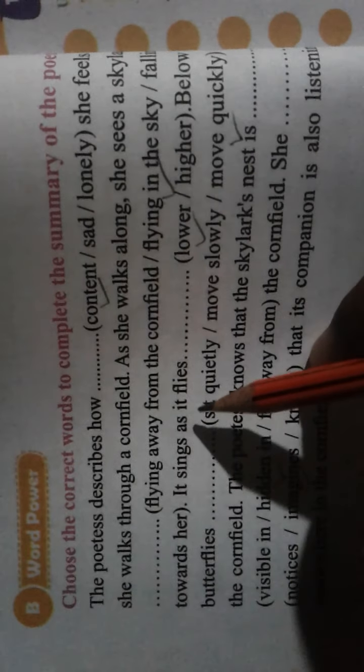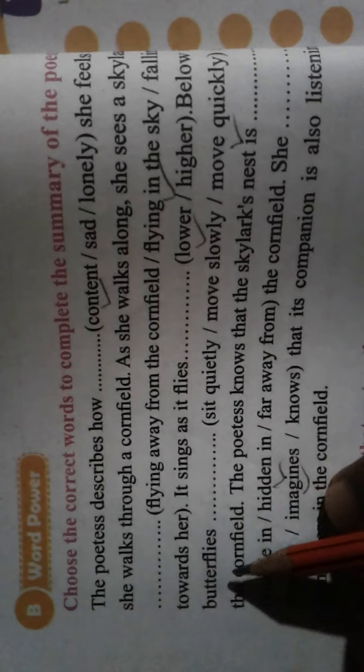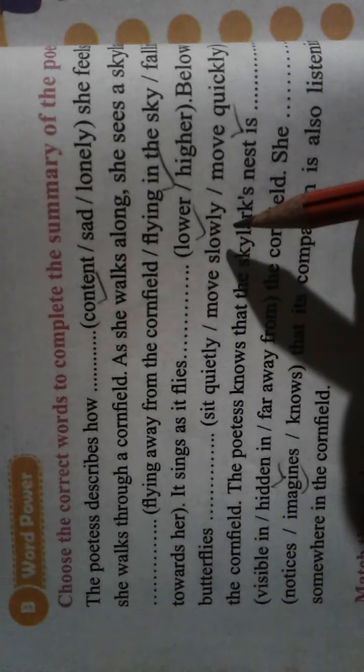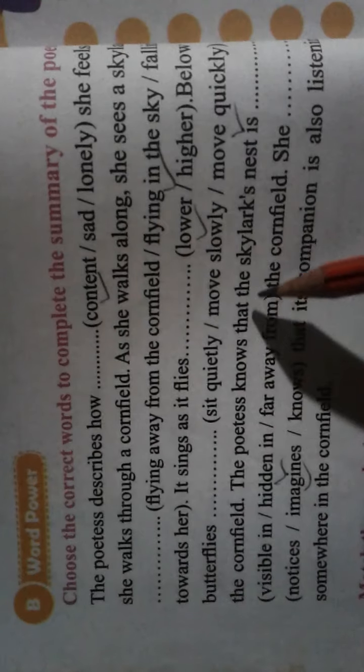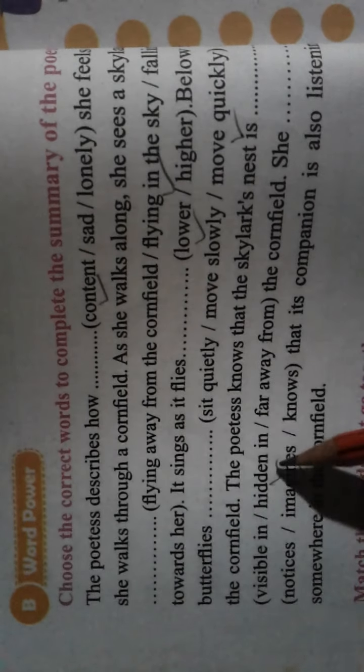As it flies, it is singing. Correct word is 'lower.' Below it, butterflies — correct word is: sits quietly and moves quickly. In the cornfield, the poet now knows that the Skylark's nest is hidden in the cornfield.